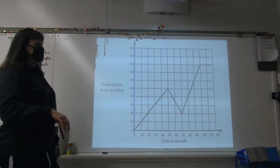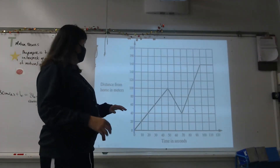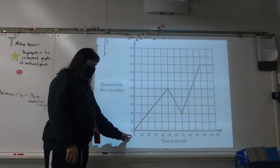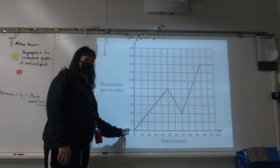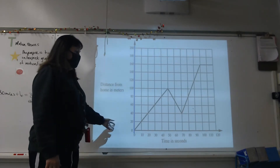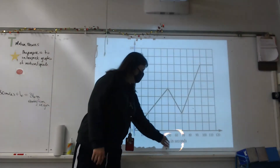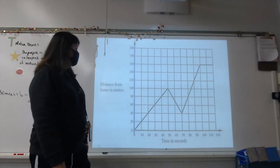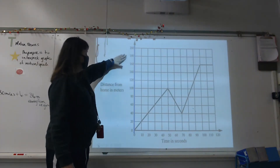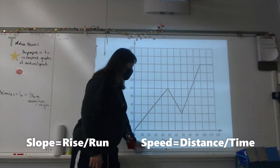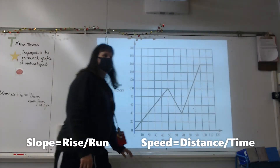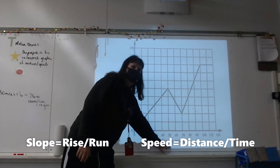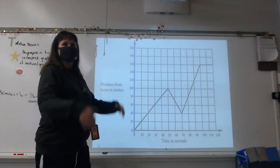Here's our graph of motion. On the y-axis we have distance from home, with home as our origin at zero-zero. Time in seconds runs along the bottom axis. When you calculate slope, it's rise over run — but for us, our rise is distance and our run is time, so our slope is speed.